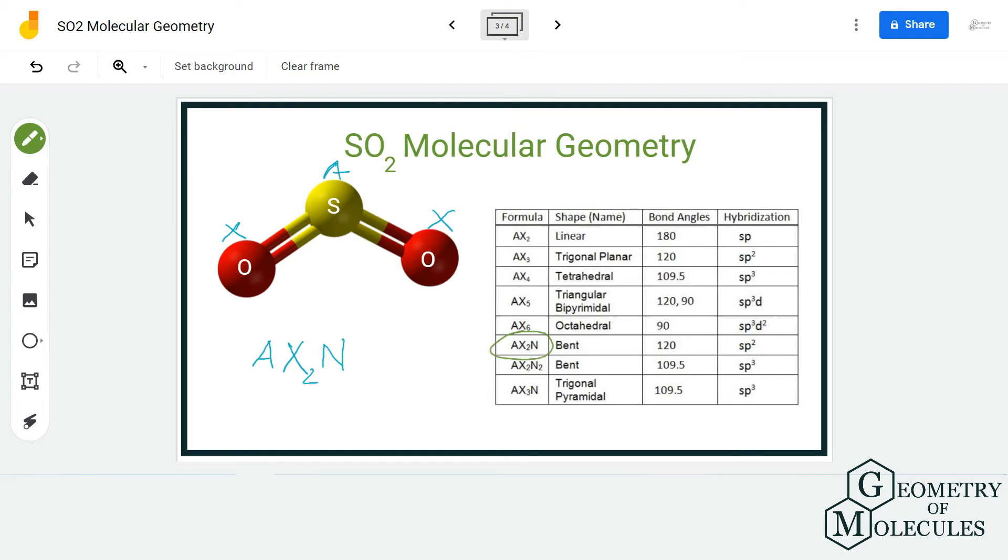If you refer to this table here, you can see that the molecules that have AX2N formula have bent molecular geometry. So the molecular geometry of SO2 is bent, and it has a bond angle of 120 degrees.